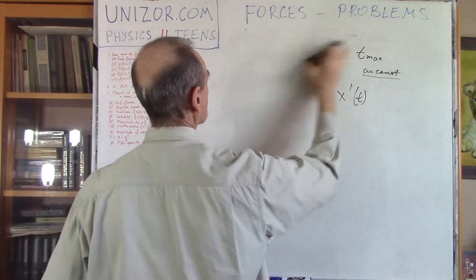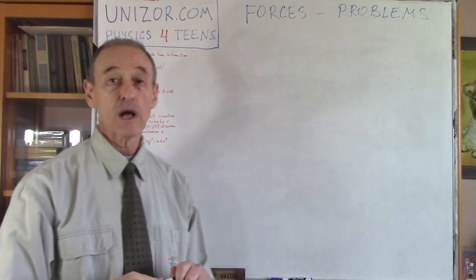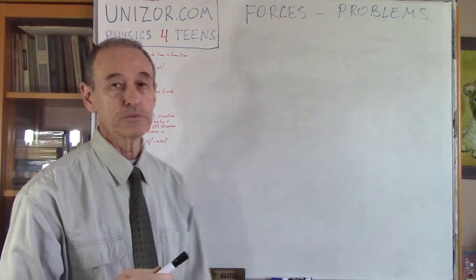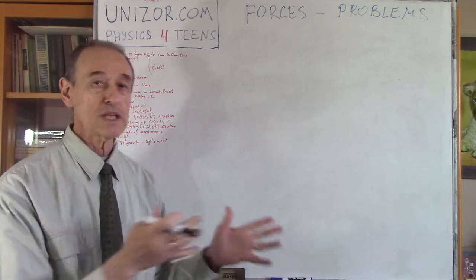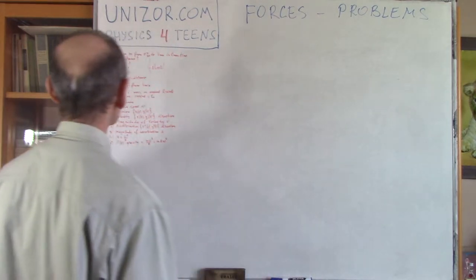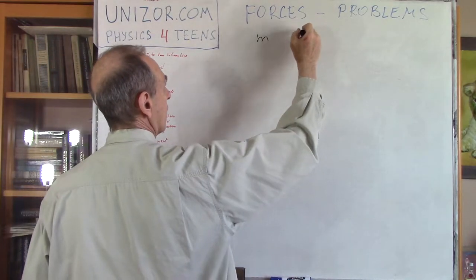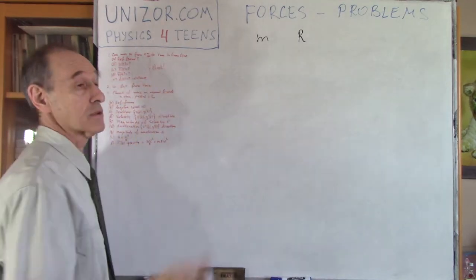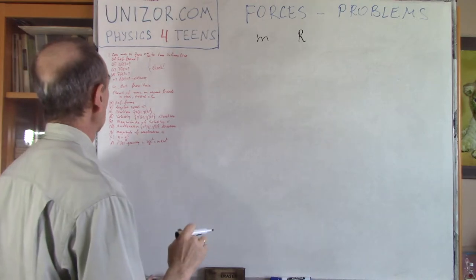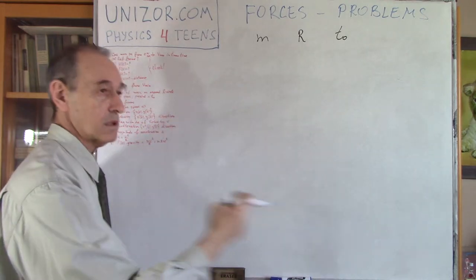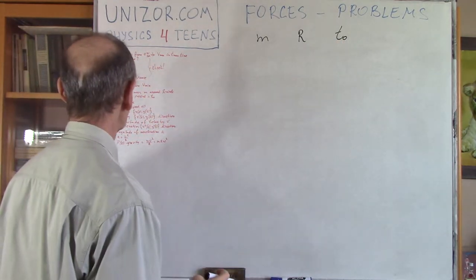My third problem is about rotation. The first two problems were about a straight line with constant acceleration. My third problem is about rotation with constant acceleration — slightly more difficult, but very slightly. Basically from kinematics we have all the apparatus we need. What's given? You have a planet of mass m rotating at distance r from its star — you can consider the Earth around the Sun. We consider the trajectory to be an ideal circle, and I have a period t0, meaning one full orbit is completed in time t0. Then I have a large number of questions from a to i.